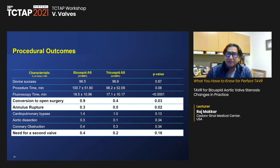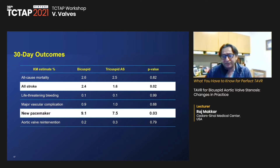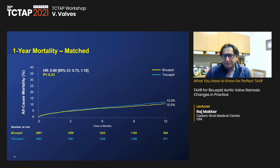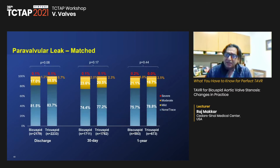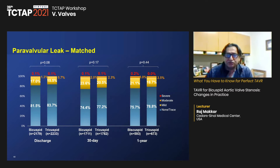At 30 days, mortality was similar at 2.6%, but stroke rates were slightly higher in bicuspid AS patients — 2.4% versus 1.6%. Pacemaker rates were also a little higher, 9.1% versus 7.5%. One-year mortality was similar between bicuspid and tricuspid patients. PV leak rates did not differ significantly, with moderate PVL around 3%, and gradients and aortic valve areas were also comparable.